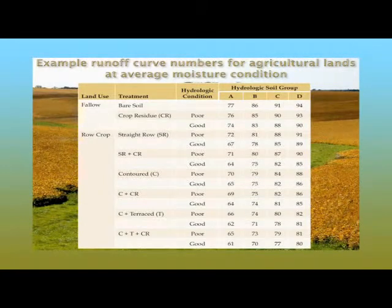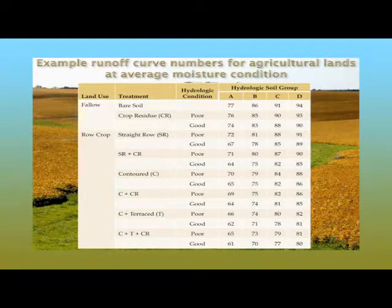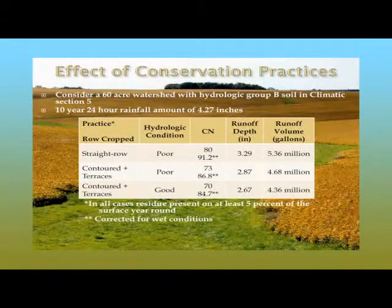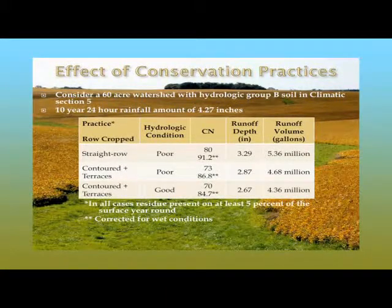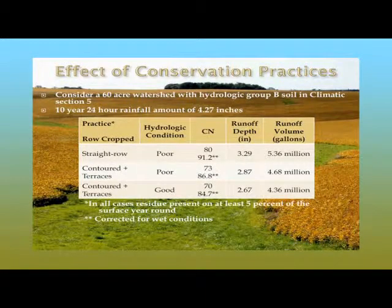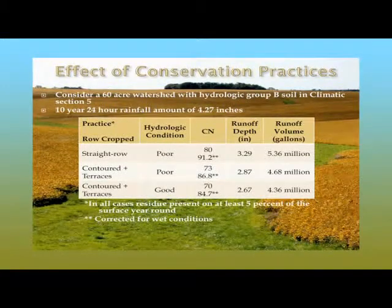Thinking of a systems approach, it's very important to look at what systems we can add within the landscape contributing to the grassed waterway, because that could reduce the flow depth and peak flow rate we'd need to design for. For example, consider a 60-acre watershed with hydrologic soil group B in climatic section 5 — central Iowa — with a 10-year, 24-hour rainfall design storm of approximately 4.3 inches.